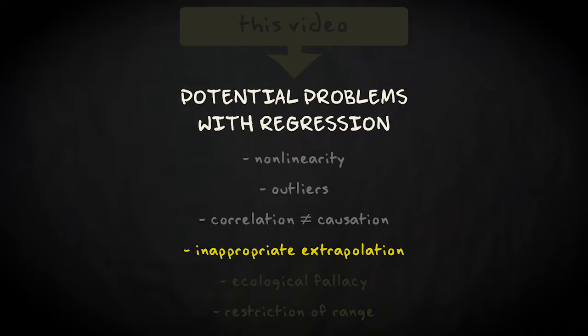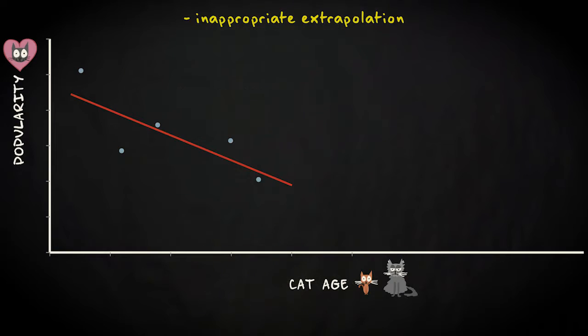Inappropriate extrapolation is another problem in regression. Take the example where we predicted popularity of cat videos using the cat's age. As the age of the cat increases, video popularity goes down.